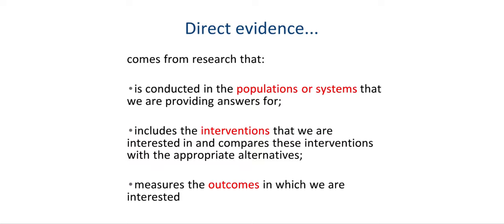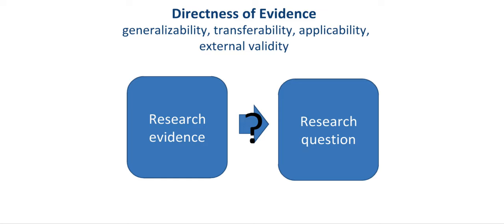Direct evidence comes from research conducted in the populations or systems we are trying to provide answers for, includes the interventions we are interested in, and compares these interventions with the appropriate comparators or alternatives. Direct evidence also comes from research that measures the outcomes in which we are actually interested and that are important to the population at hand. The directness of evidence includes conceptual issues frequently expressed in terms of generalizability, transferability, applicability, and external validity — whether available research evidence is direct enough to answer the question at hand.